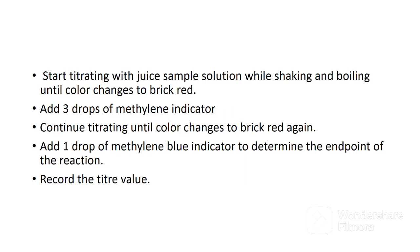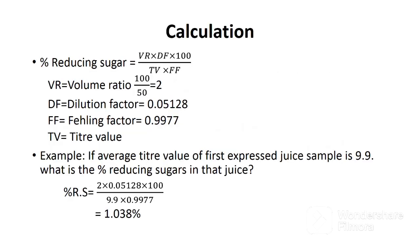During the analysis of the first expressed juice, you can prepare Fehling solution for the next sample. You have to do this all the way up to the last sample. After getting your titer values, below is the formula used to calculate the percentage reducing sugars in juice samples. Percentage reducing sugar is equal to Vr times Df times 100, divided by Tv times the Fehling factor.